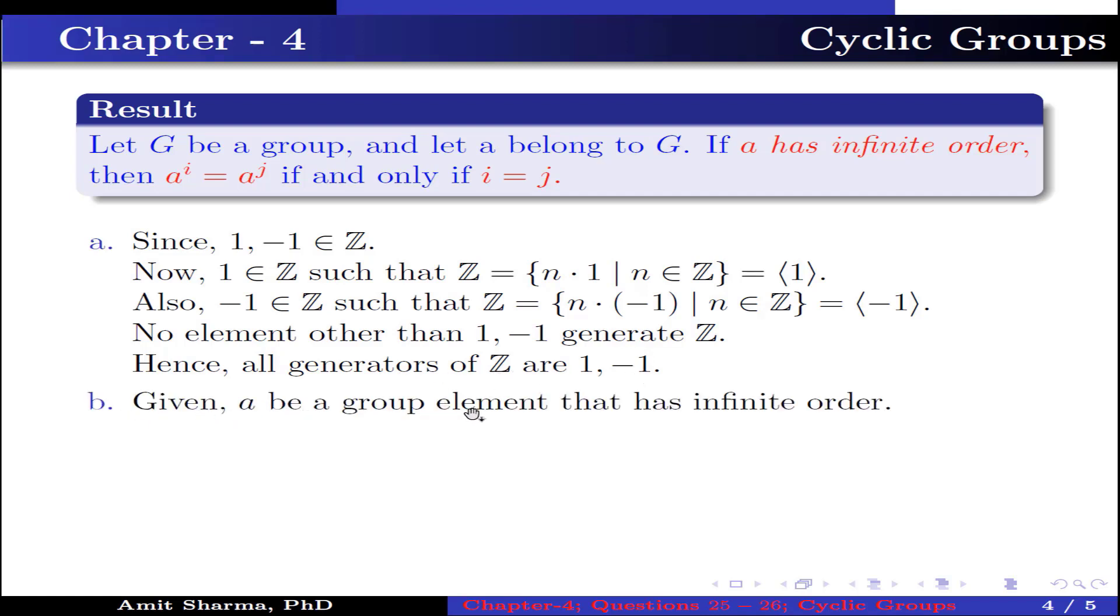Part b: Given a is a group element that has infinite order. Now we have to find all the generators of the group generated by a. Let us assume that a^k generates this group.